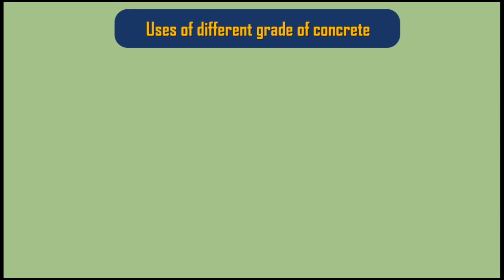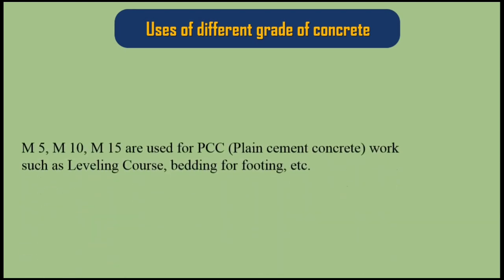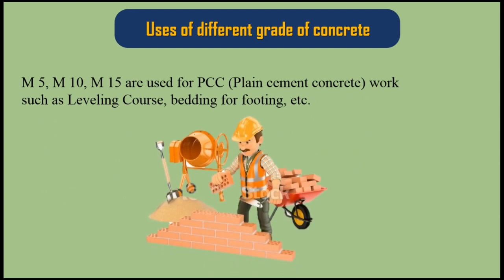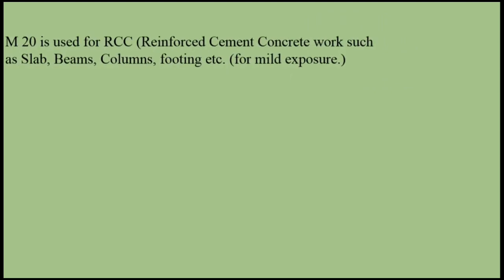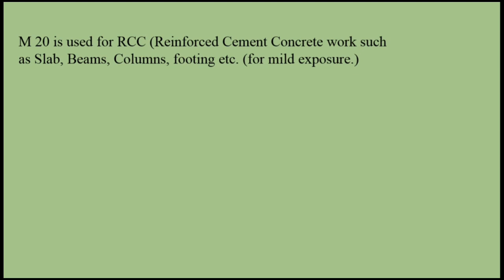Uses of different grades of concrete: M5, M10, and M15 are used for PCC (plain cement concrete) work such as leveling courses and bedding for footing. M20 is used for RCC (reinforced cement concrete) work such as slabs, beams, columns, and footing for mild exposure.